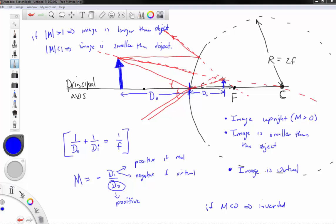Then you can draw the image over here. Here you can measure how far this is. You should measure 6 centimeters in this case. And you can see that, yeah, it's upright, it's virtual, it's smaller or reduced compared to the original object.